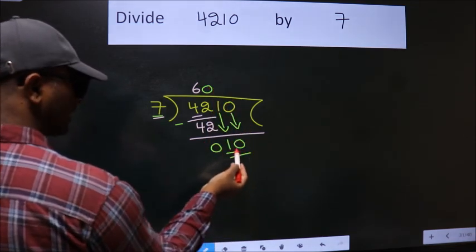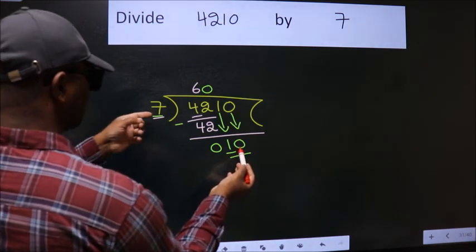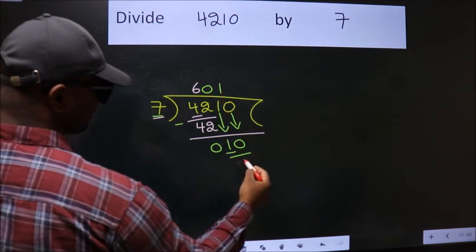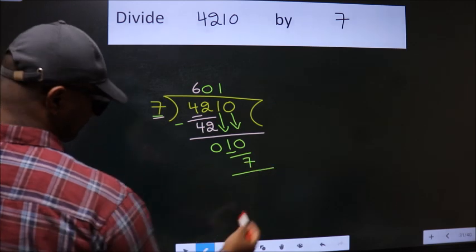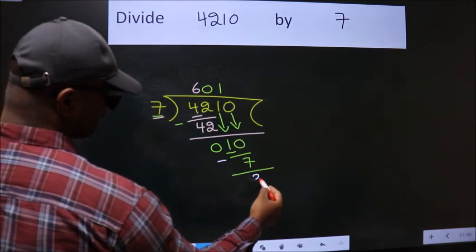So 10. A number close to 10 in 7 table is 7 once 7. Now we subtract. We get 3.